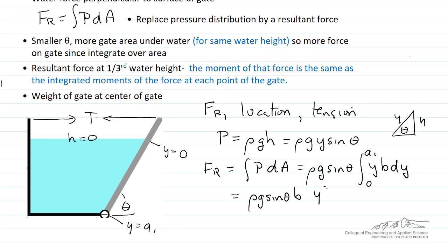This gives y squared over two evaluated between zero and a1. So the force on the gate is ρgb sin(θ) a1² / 2. That's the resultant force.